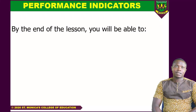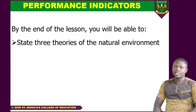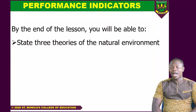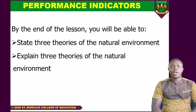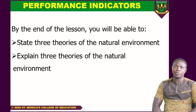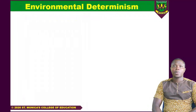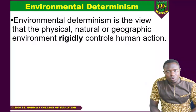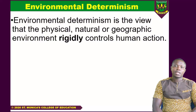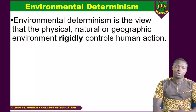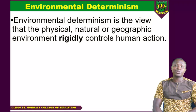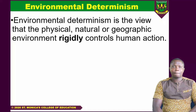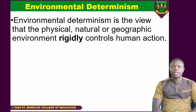The study indicators are the following: by the end of the lesson, you'll be able to one, state at least three theories of the natural environment, and the next one is to explain three theories of the natural environment at least. I must say that there are several theories in the course that we are doing — theories that explain the relationship between the environment and humanity.